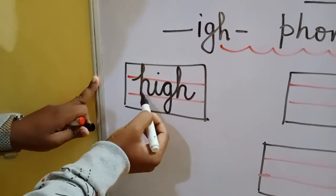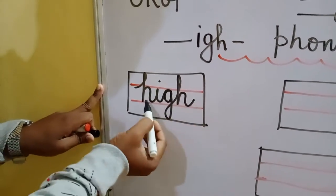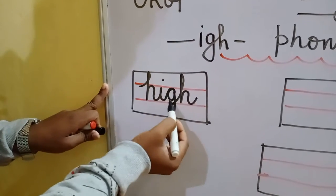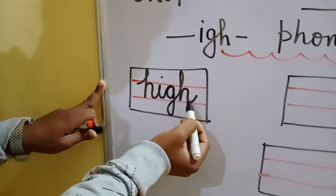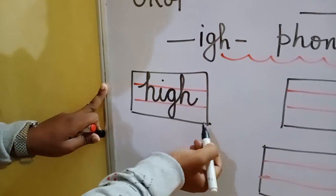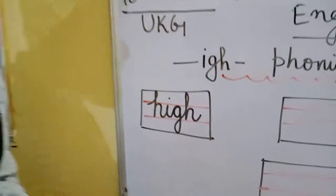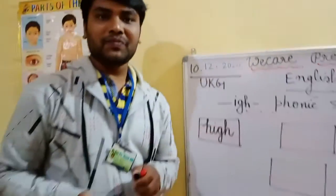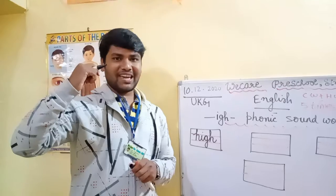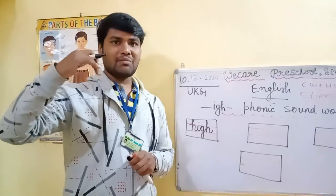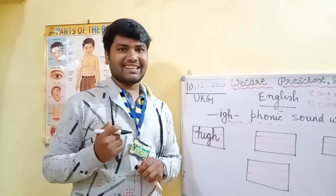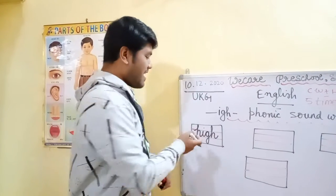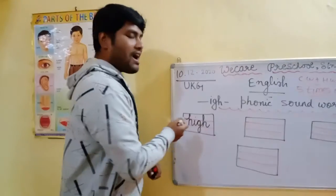Hi. Hi — H se sound kya aega? H. Aur baaki IGH se sound kya aega? I. Hi. HIGH matlab kya hota bacchow? Uuncha — jo ki seater bahut uncha ho, top mein ho — HIGH bote hain.